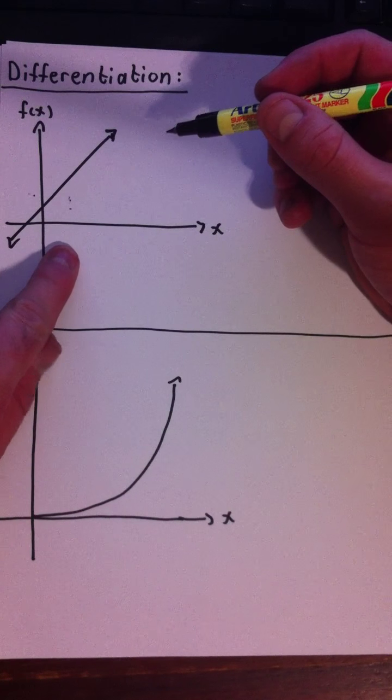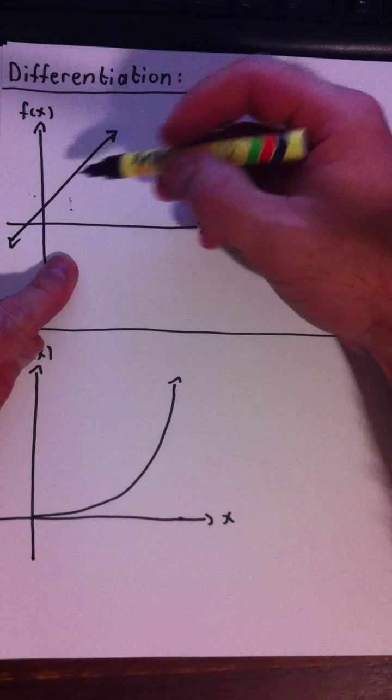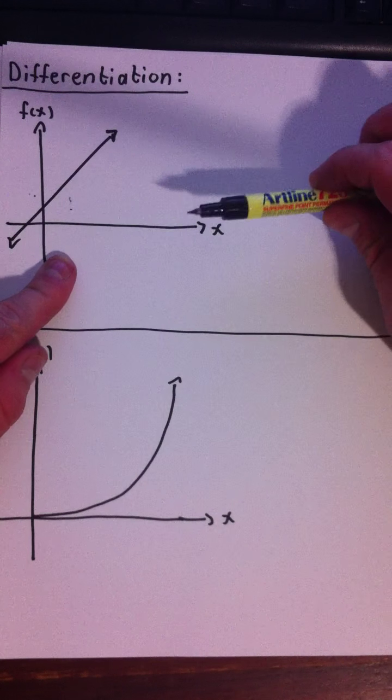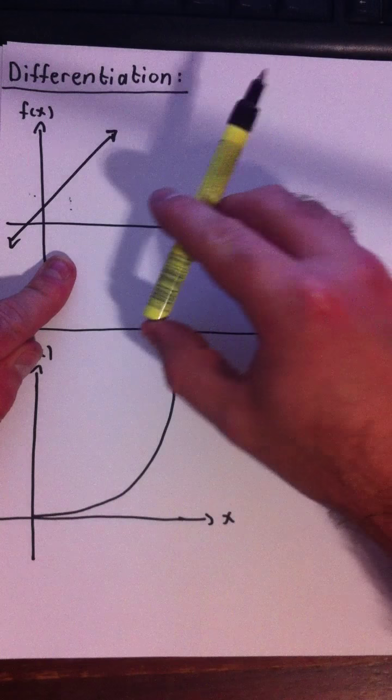Suppose we have a straight line. To find the gradient of a straight line, we just take the change in y divided by the change in the x values, or the rise over run, and that gives us the steepness of the line.